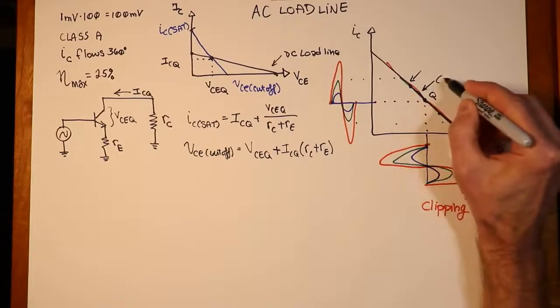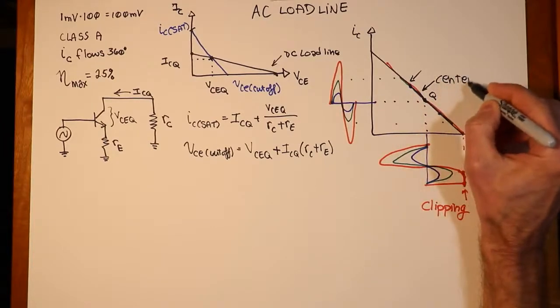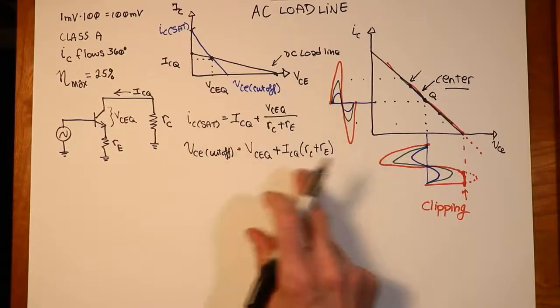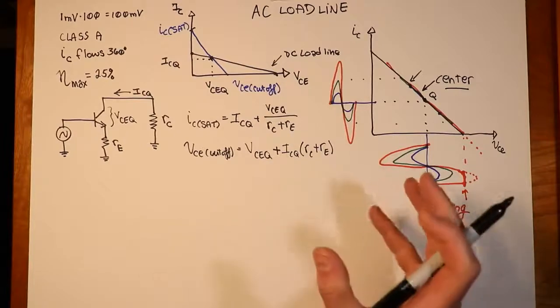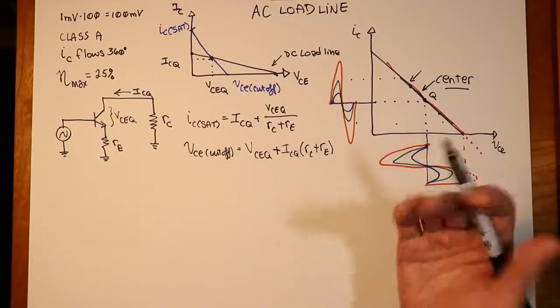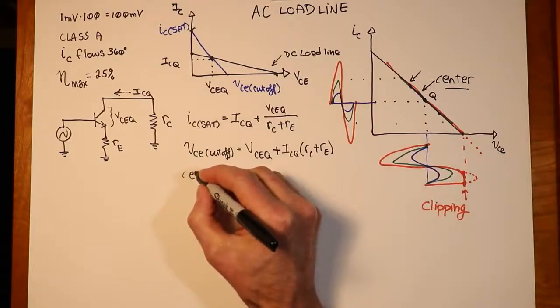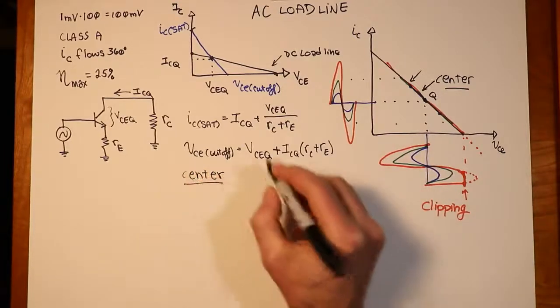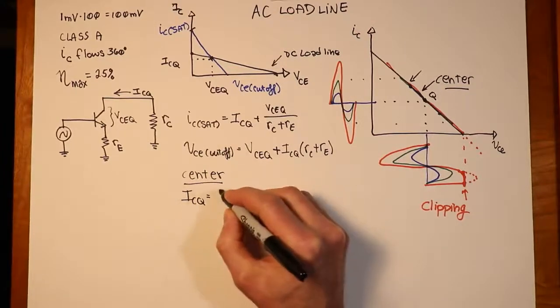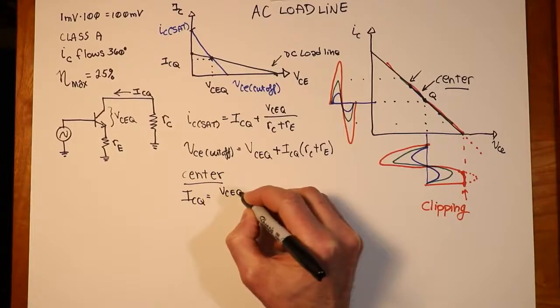The best we can do here is to place the Q point right in the center. If I can get it right in the center, we'll have maximum usage of that load line. We'll get the biggest possible signal. So in other words, I want these two halves in these two equations to be the same. I'll want them to literally be halves. In other words, if we have a centered Q point, if the Q point is in the center, then it would have to be true that ICQ equals VCEQ divided by RC plus RE.